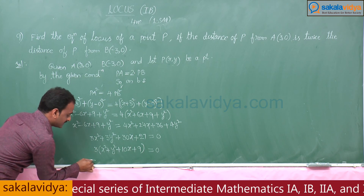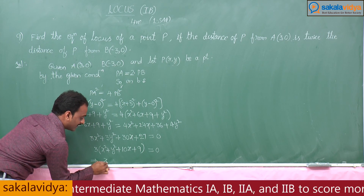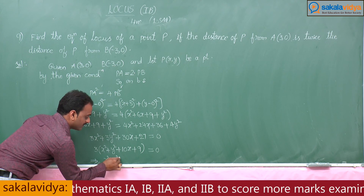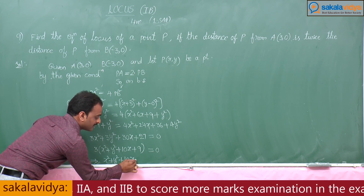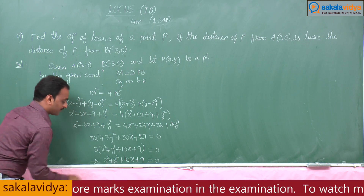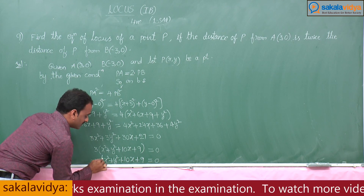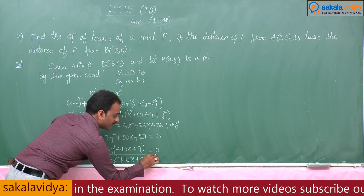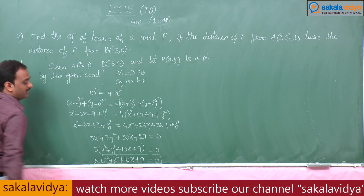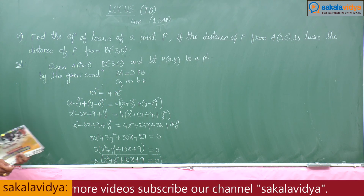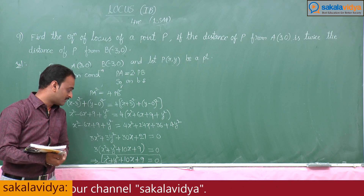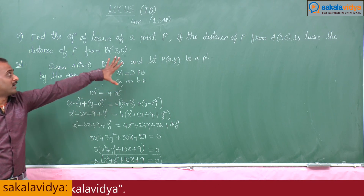Therefore the required equation of the locus of P is: x² + y² + 10x + 9 = 0.